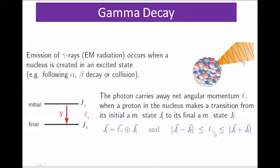The angular momentum of the photon is such that its magnitude is between |Ji - Jf| and Ji + Jf. That is, the angular momentum of the photon is greater than or equal to |Ji - Jf| and less than or equal to Ji + Jf.